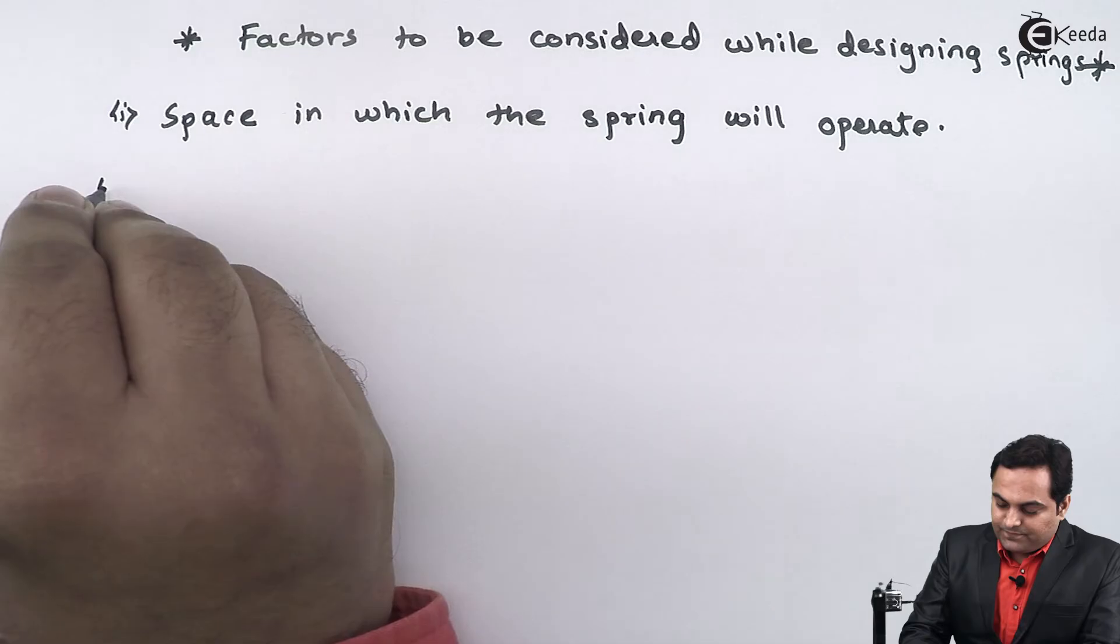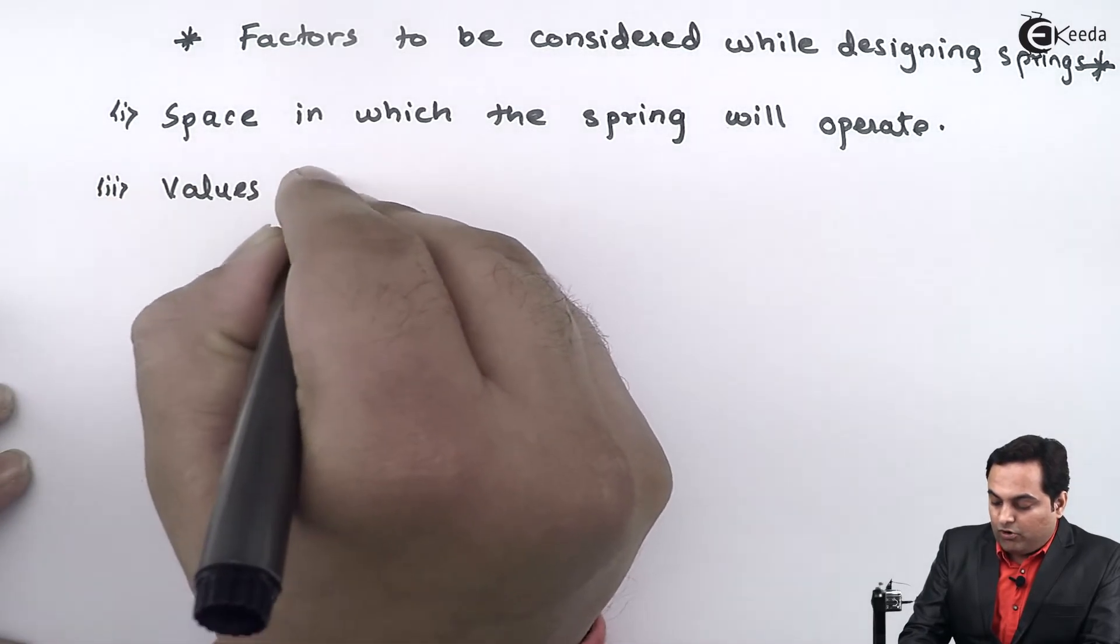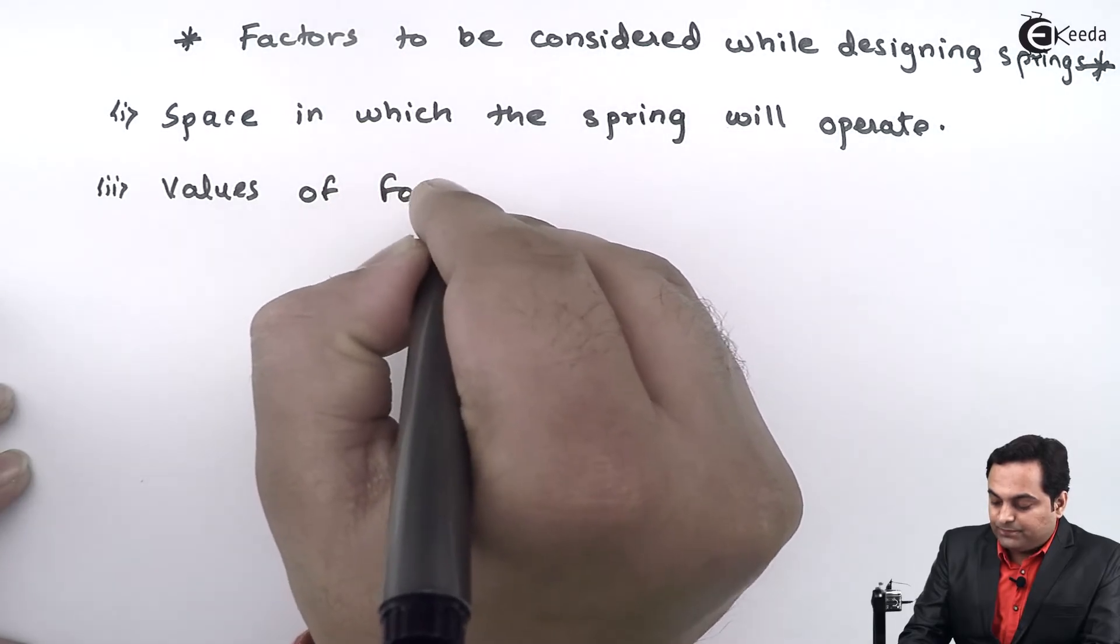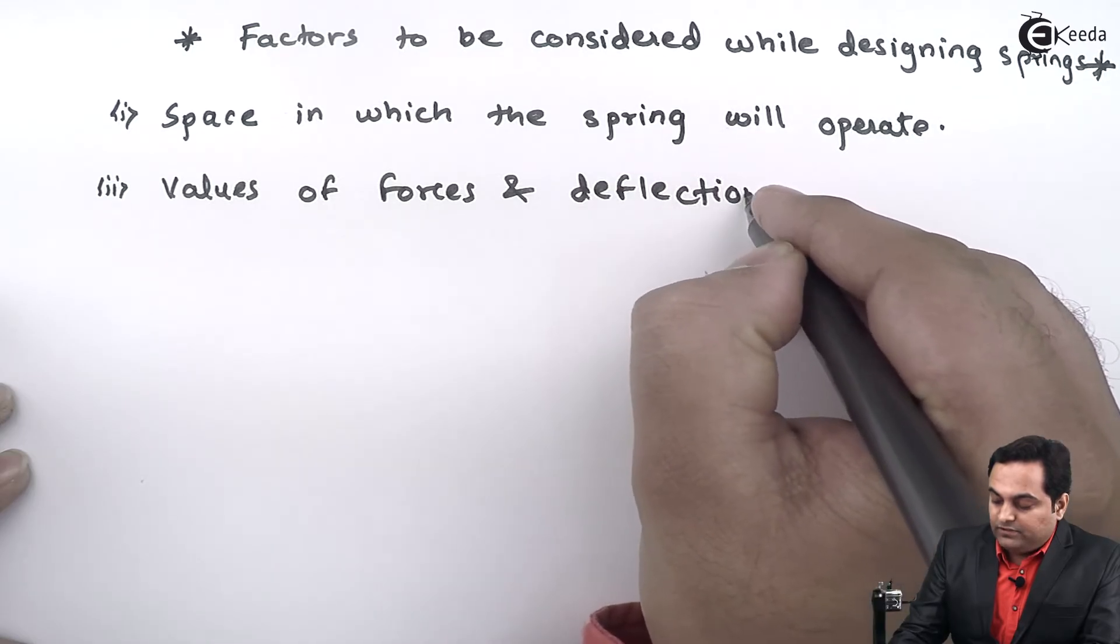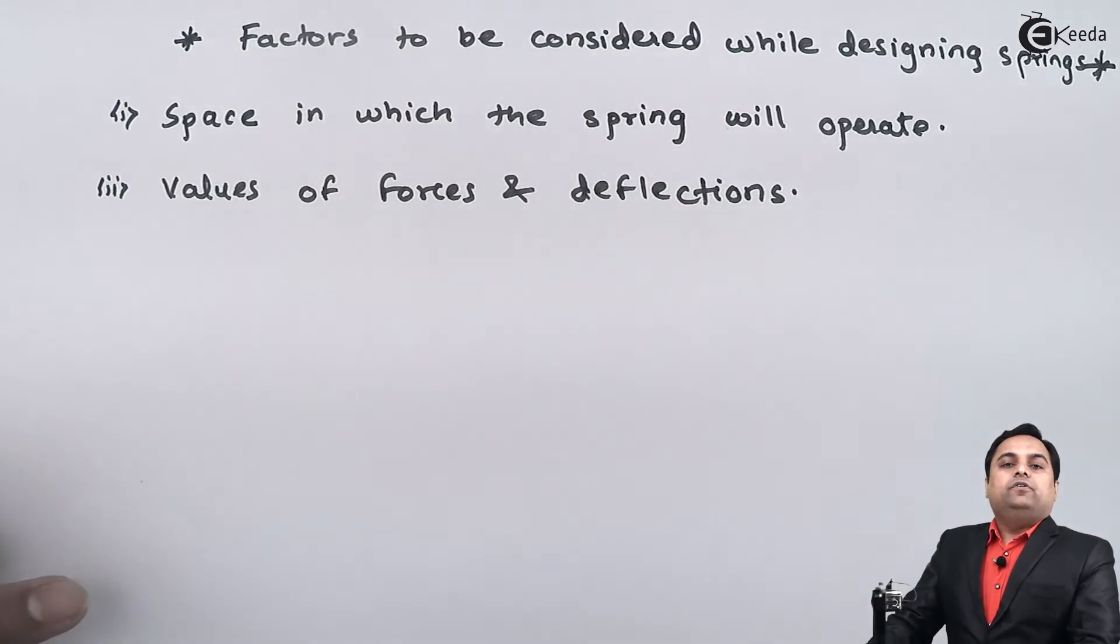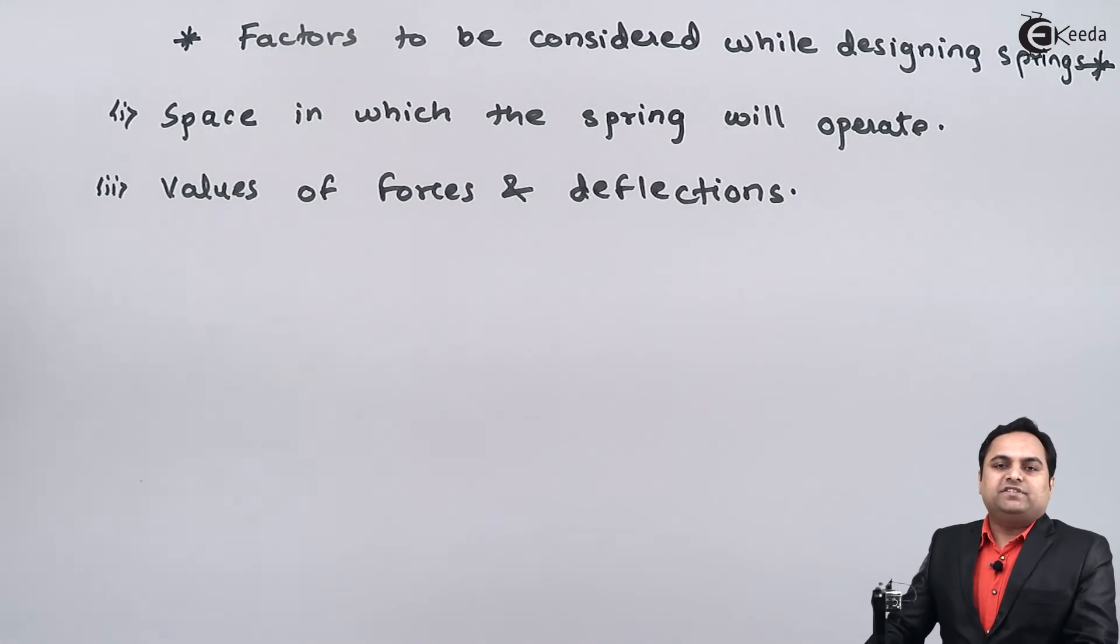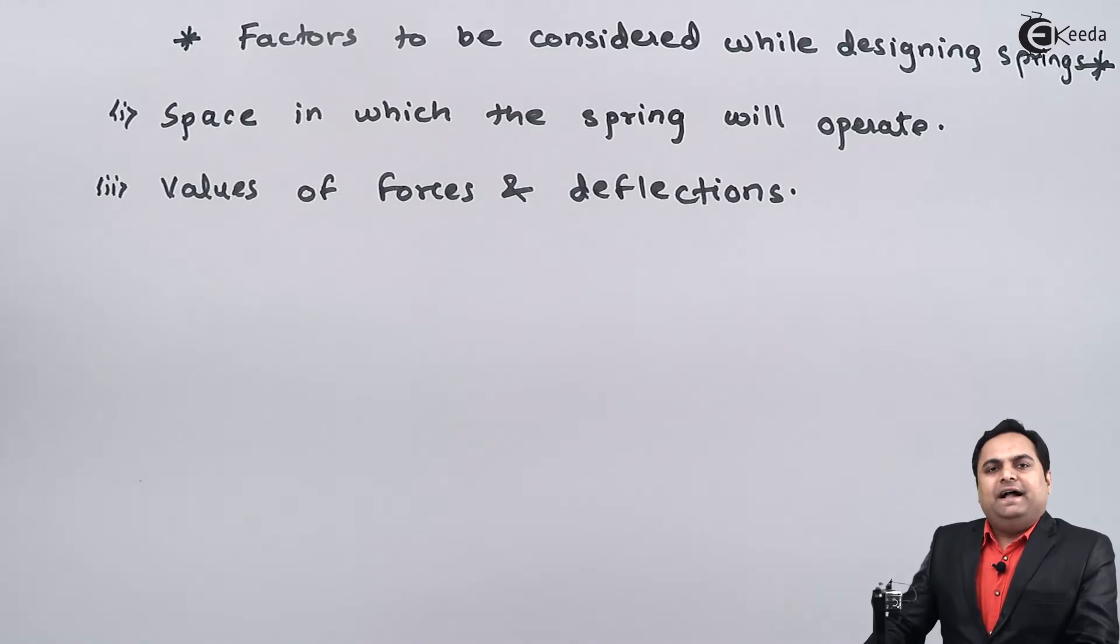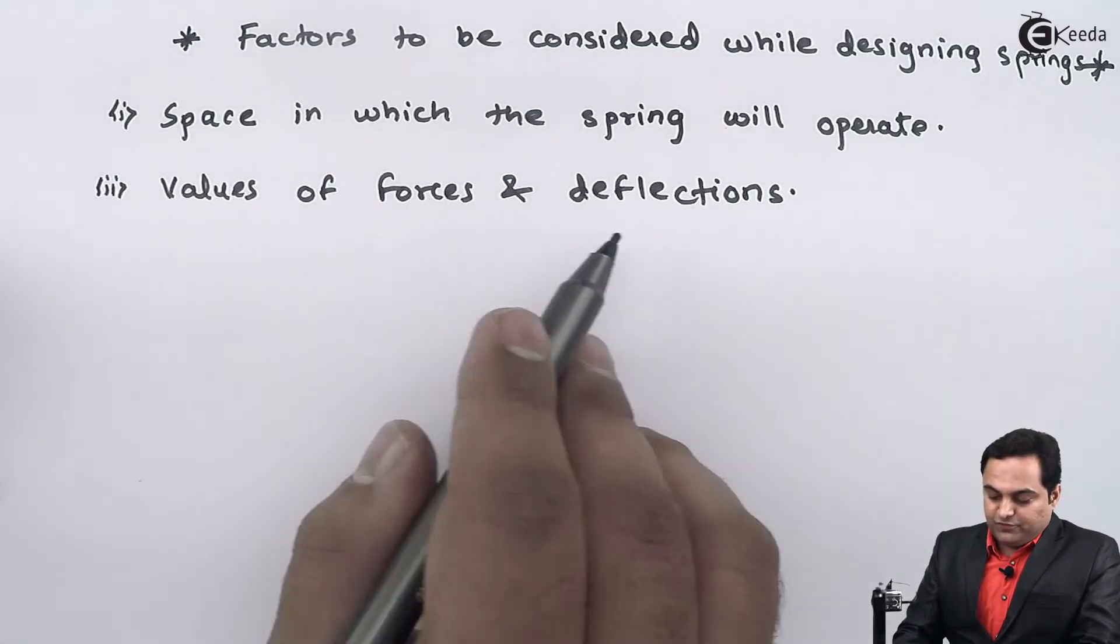Next, values of forces and deflections. Here we have to know how much is the load which is acting on the spring and with the help of that load how much the spring is going to deflect, that is what would be the change in shape of the spring. So the second most important point is values of forces and deflections.